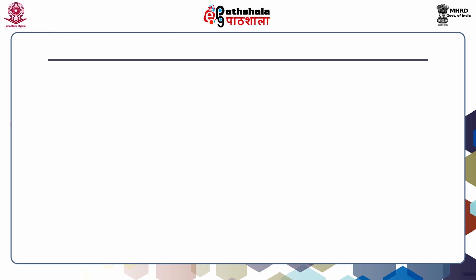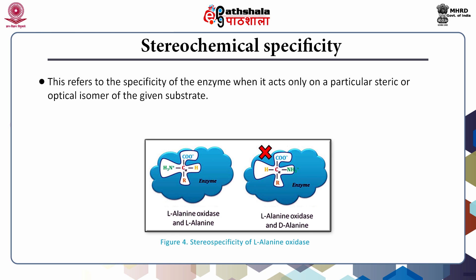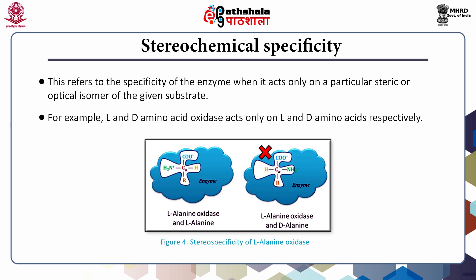Now we will look at what is meant by stereochemical specificity. This refers to the specificity of the enzyme when it acts only on a particular steric or optical isomer of the given substrate. This is also known as optical specificity and is one of the highest forms of specificity displayed by enzymes. As shown in the figure, the L and D amino acid oxidases exhibit stereochemical specificity and act only on their respective L and D amino acids. The L-alanine oxidase will not work on D-alanine as a substrate, and the D-alanine oxidase will not work on L-alanine as a substrate.